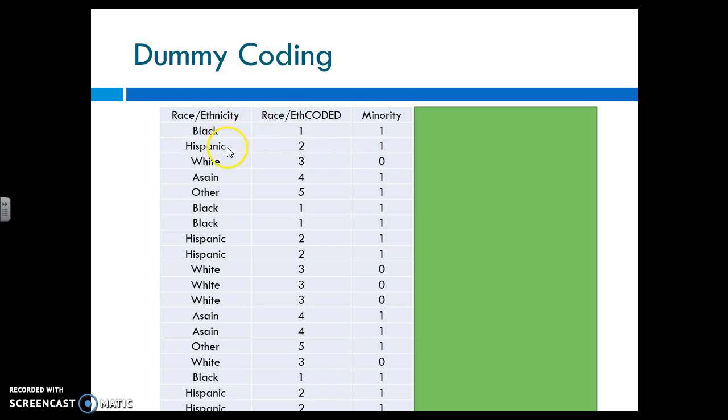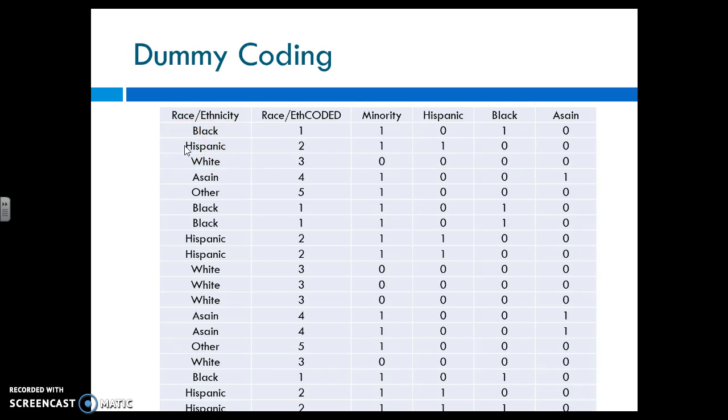If though I want to look at each one as a predictor. So is Hispanic, being Hispanic, a predictor of something, then I can code them all very differently. I can code Hispanic yes or no, black yes or no, Asian yes or no, and all the way down. Your data must be coded like this before you can use a categorical variable.